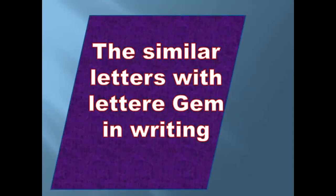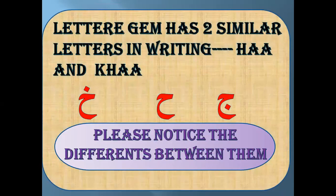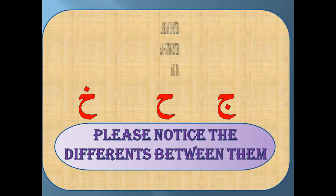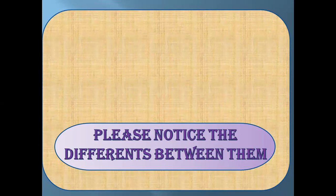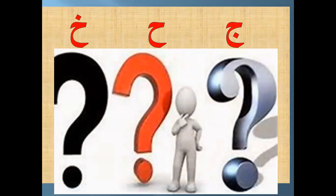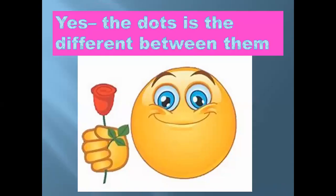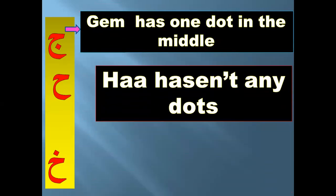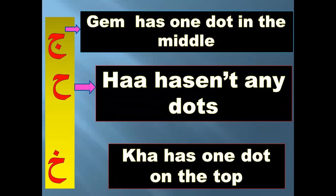Let's go to the third part: the similar letters in writing with the letter Jim. The letter Jim has two similar letters in writing: Ha and Kha. Jim, Ha, Kha — please notice the difference between them. The difference between them is the dots. Jim has one dot in the middle, Ha has no dots, and Kha has one dot on top.